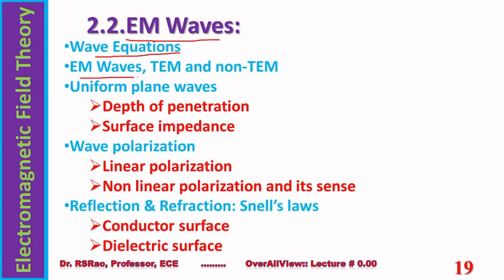Several types of EM waves exist. Broadly, they are TEM and non-TEM. In TEM, there are plane waves, cylindrical waves, and spherical waves. In non-TEM, there are TE waves, TM waves, and hybrid TE+TM waves. All these waves are introduced under EM waves.